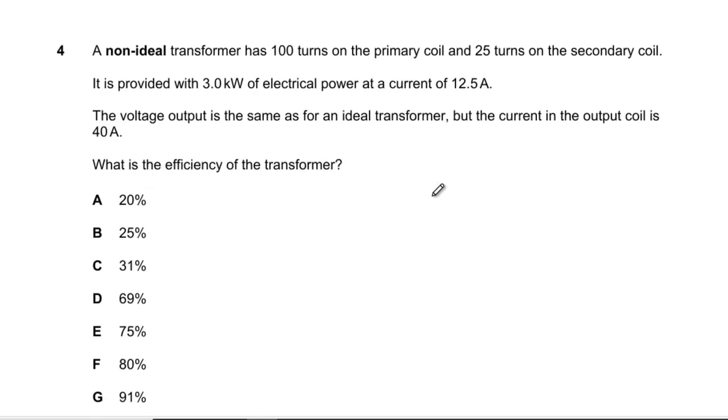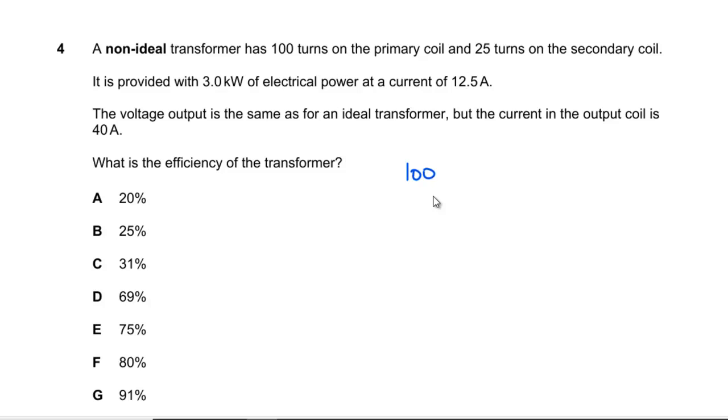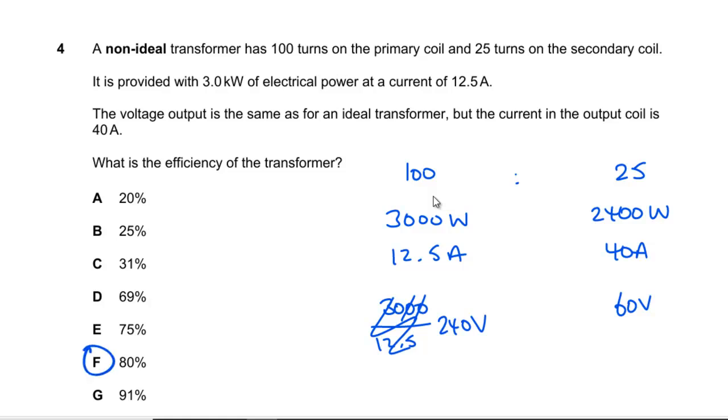Question 4: Non-ideal transformer has 100 turns on the primary coil, 25 turns on the secondary coil, it's given 3 kilowatts and a 12.5 amp current output. Voltage is the same as for an ideal transformer but current output is 40 amps. What is our voltage on the way in? 3000 divided by 12.5, which is 100 divided by 8, so multiplied by 8 gives 240 volts going in, so I'm going to have 60 volts over here, which means my power is going to be 2400 watts. So I've lost a fifth of the power, down to 80% efficiency, which is F.